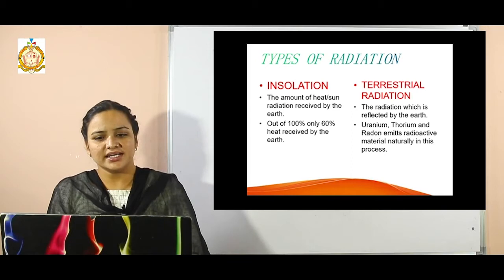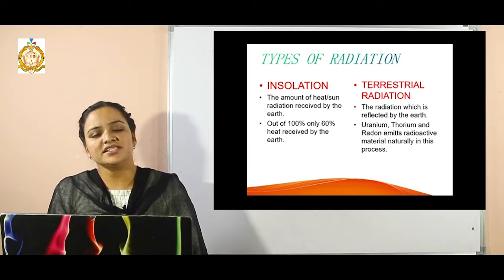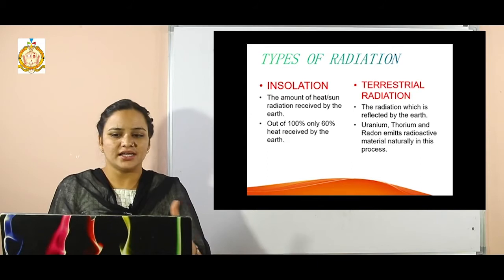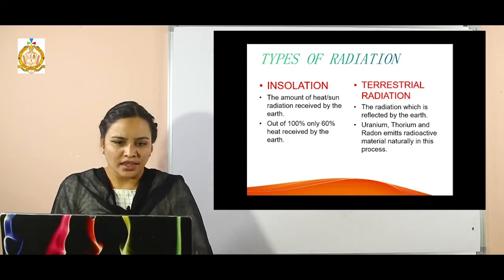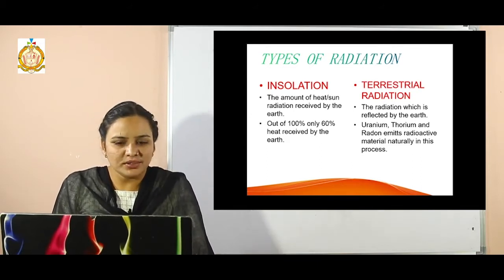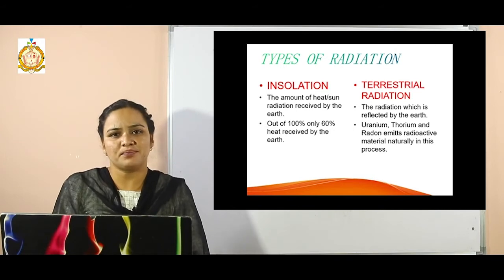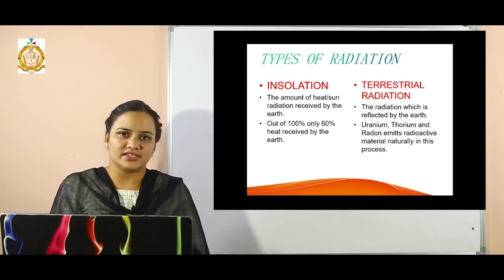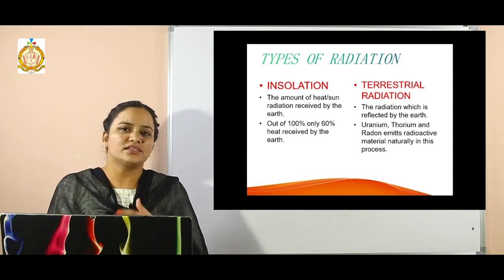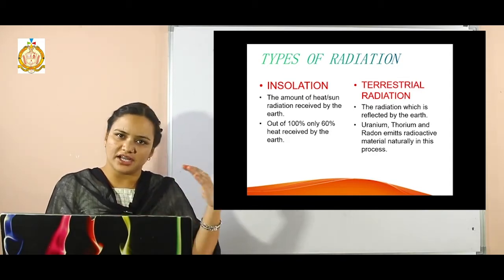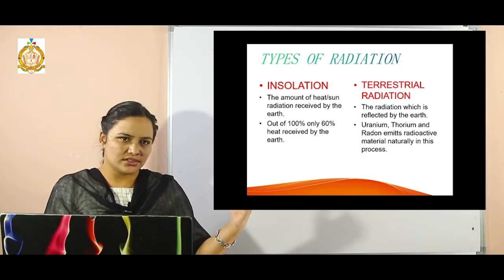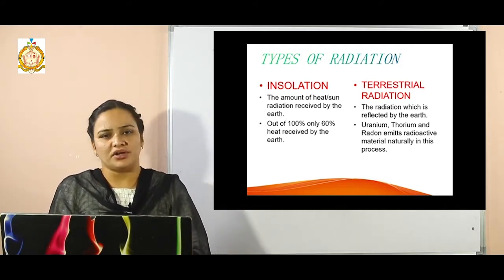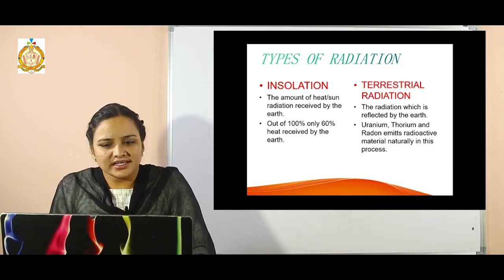Terrestrial radiation is the heat which is reflected back by the earth to the atmosphere or to space. In insolation, out of 100 percent, we are getting only 60 percent heat to the earth's surface. This 60 percent is divided into the heat absorbed by the atmosphere and by the ground area.